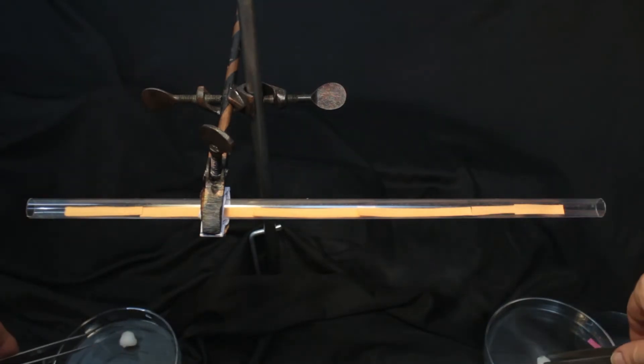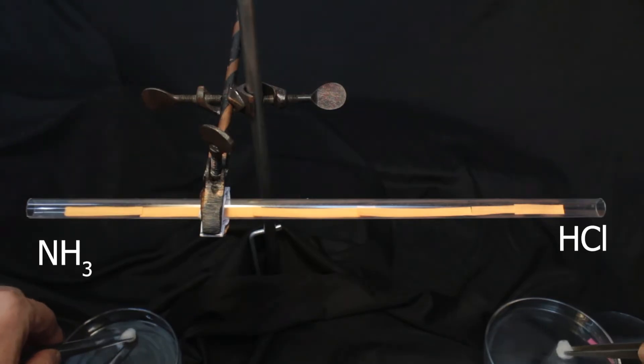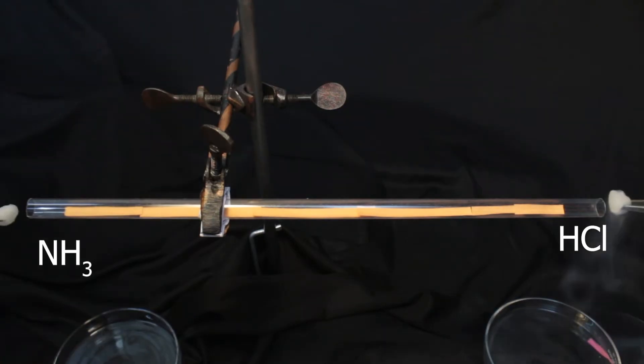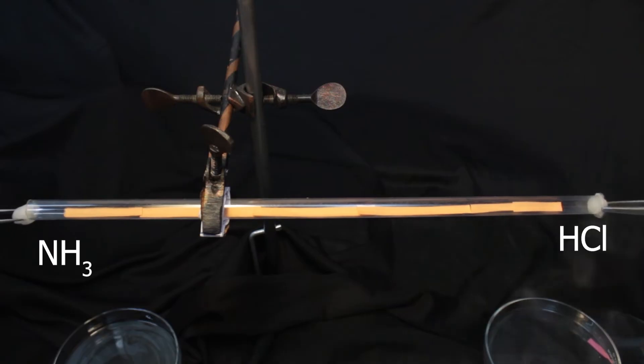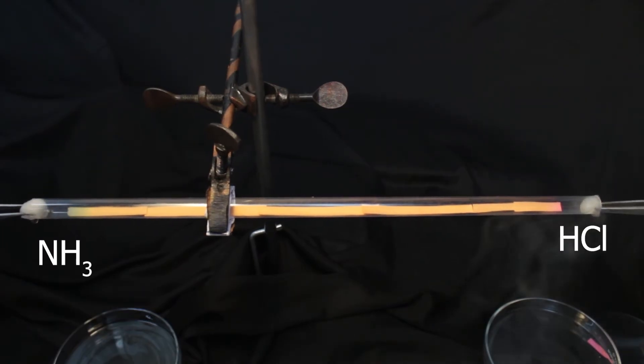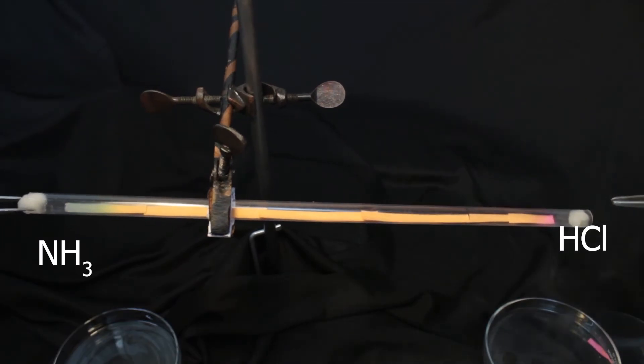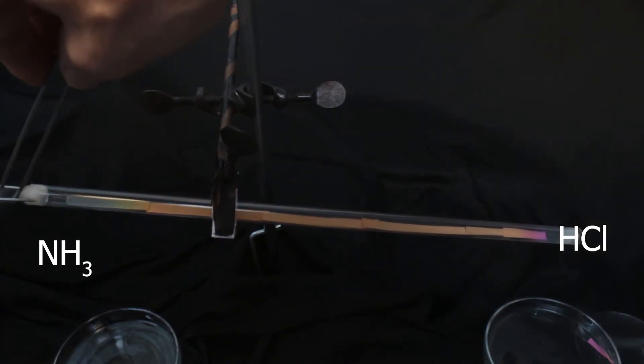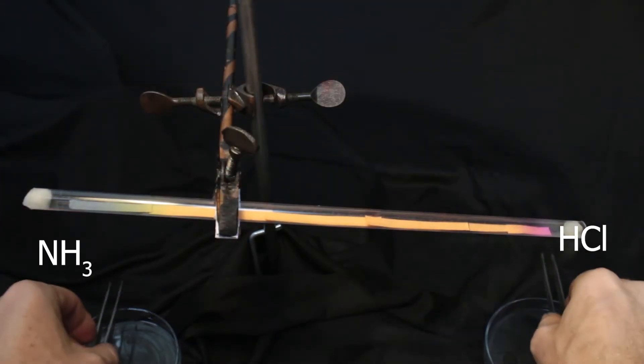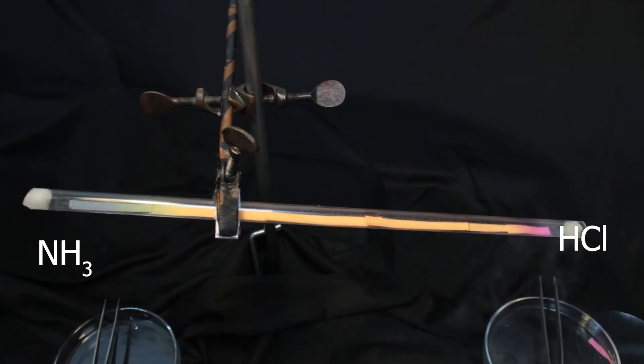Also, there is one idea that lighter molecules move faster at a given temperature. Relative formula mass of ammonia is 17, relative formula mass of hydrogen chloride is 36.5. It is about two times heavier, so it's supposed to move a bit slower.